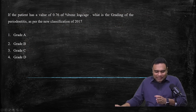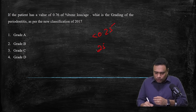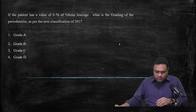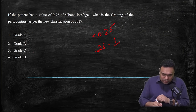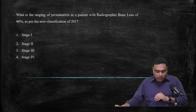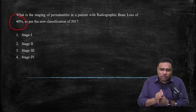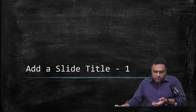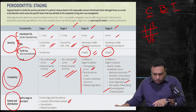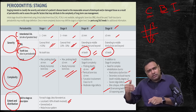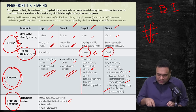Next MCQ: if a patient has a bone loss percentage divided by age value of 0.76, what is the grading? Grade A is less than 0.25, Grade B is 0.25–1.0, Grade C is greater than 1. The patient's value is 0.76 — that is Grade B. There is no Grade D. Another question: what is the staging for a patient with radiographic bone loss of 40%? Less than 15% is Stage 1, 15–33% is Stage 2, anything more is Stage 3 or beyond. Stage 3 extends to the middle third; Stage 4 can extend to the apical third. 40% is close to 33%, so this is best classified as Stage 3.